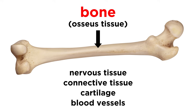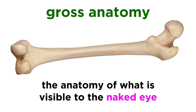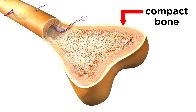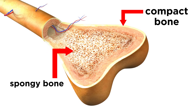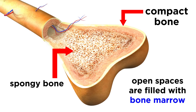We will have to examine bones at a few levels of complexity, starting with gross anatomy, meaning the part that is visible to the naked eye. The outer layer of any bone is made of compact bone, which is very dense and smooth. Inside there is lots of spongy bone, which is like a honeycomb of little needles. Typically, the open spaces will be filled with bone marrow, which we will discuss in a moment.